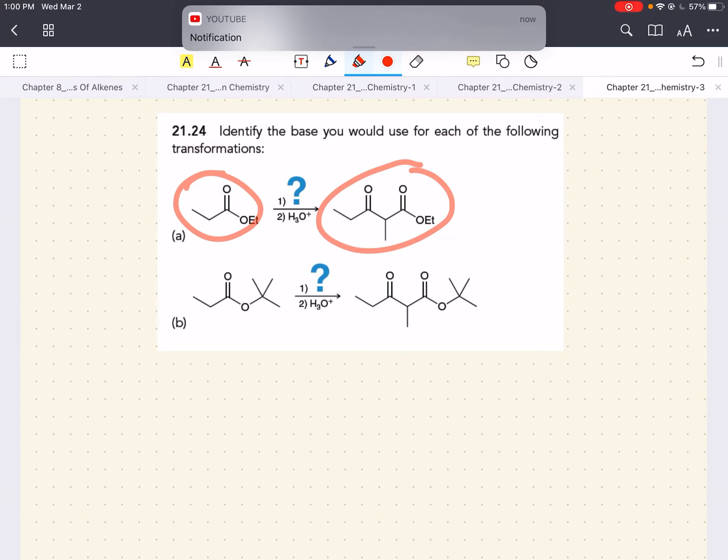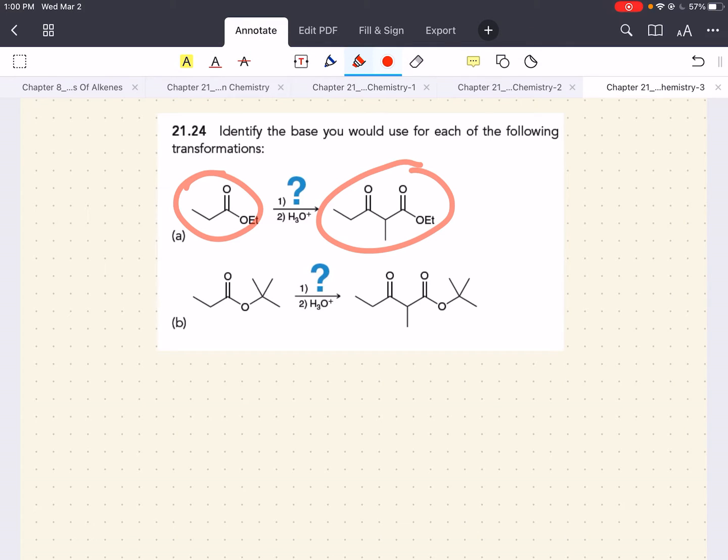Now, the alkoxy group present on the starting ester is an ethoxy group. So, what we want as a base is sodium ethoxide. We want to preserve the alkoxy group in our base as well, so we prevent transesterification.